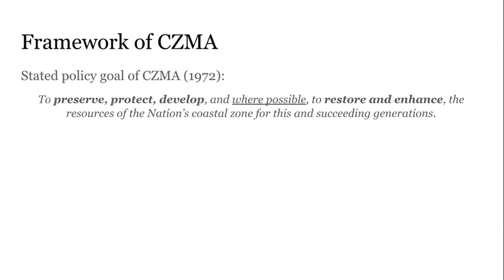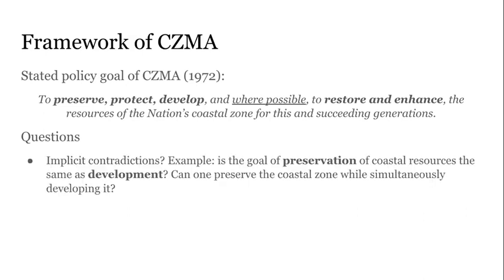In terms of a framework of the Coastal Zone Management Act, we think of it as a federal statute — a law passed by Congress — which means it sits below constitutional protections like federalism and above regulations that contradict express provisions of the statute. We can start with the stated policy goal of the Coastal Zone Management Act, which is explicitly stated in the statute: to preserve, protect, develop, and where possible, to restore and enhance the resources of the nation's coastal zone for this and succeeding generations. Looking at this language, there are some implicit contradictions.